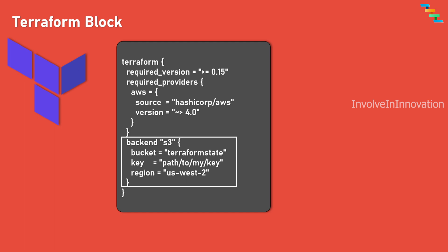For example, if you want to use S3 as a backend, you need the following configuration: bucket — this assumes we have an S3 bucket called 'terraform-state'; key — the path where the Terraform state is written to, here it is 'path/to/my/key'; and region — the configuration for the AWS region. So this is about the Terraform block.